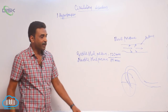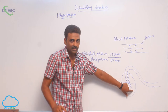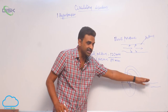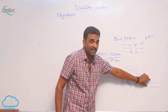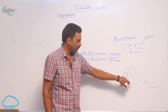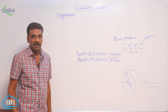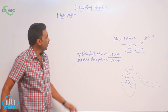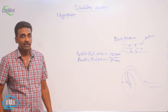Diastolic blood pressure refers to when the heart is in a relaxed state. Even when the heart is relaxed, some blood is still flowing through the arteries, and whatever pressure it exerts on the walls of the arteries at that time is called diastolic blood pressure. Blood pressure varies with each heartbeat.